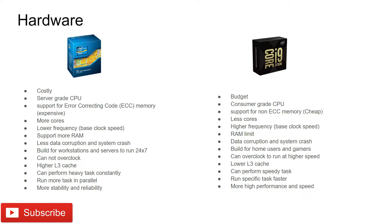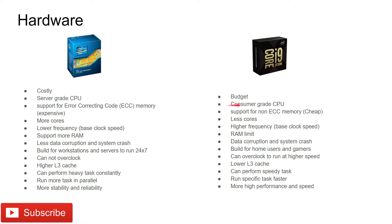Let's start with Xeon. Xeon is one of the costlier processors, while Core processors are considered more budget-friendly. Xeon processors are basically used for servers, making them a server-grade CPU, while Core i9 and Core i7 are consumer-grade CPUs found in most laptops and desktops. Most blade and rack servers come with Xeon processors. Xeon processors also support ECC RAM — Error Correcting Code RAM — whereas Core i9 processors do not.